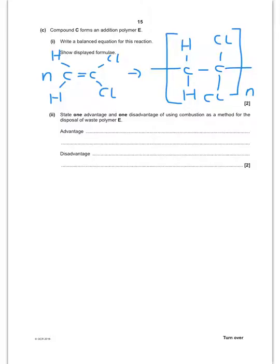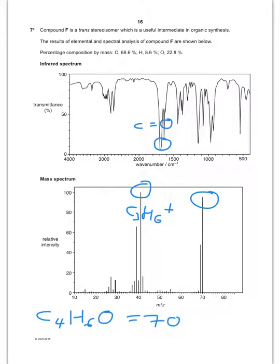Compound C forms an addition polymer. Write the balanced equation - quite straightforward. Don't forget your n's on either side of the equation. One advantage and one disadvantage of using combustion as a method for disposal of waste polymer E. Well an advantage is of course if you combust it you can produce energy from it to produce electricity. A disadvantage of course is because it contains chlorine atoms you could produce HCl which could cause acid rain. And obviously because it contains carbon as well you would form carbon dioxide which causes global warming.